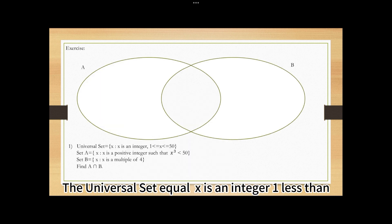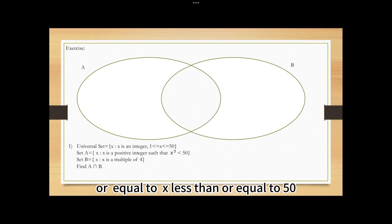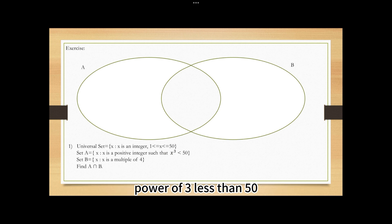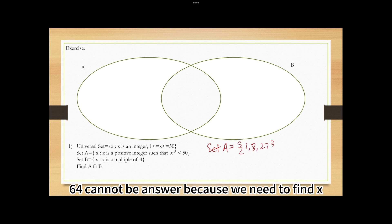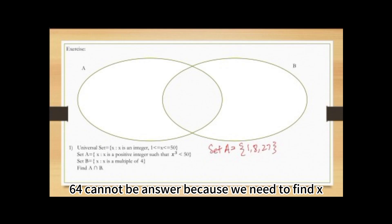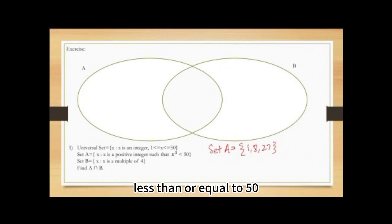The universal set equals x is an integer, 1 ≤ x ≤ 50. Set A equals x is a positive integer such that x³ < 50. Set A has elements 1, 8, and 27. Note that 64 cannot be included because we need x ≤ 50, and 64 is greater than 50.